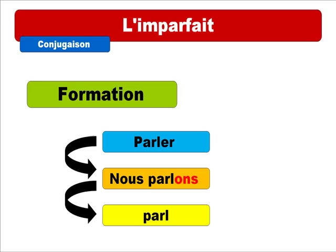Let's take a second example: finir, which means 'to end' or 'to finish.' At the present form for nous, we get 'nous finissons' — it's a regular verb from the second group. The idea is to take away the -ONS ending, and then you get FINISS — F-I-N-I-S-S — which will be the stem for the imparfait.